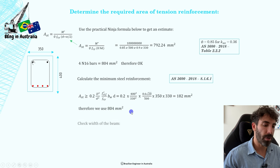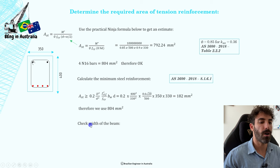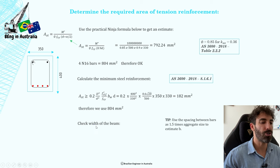Before we keep going, let's check if four N16 bars will fit in our beam. You can either draw this in CAD or you can manually calculate it. To manually calculate it, you need to know that the spacing in between bars is 1.5 times the aggregate size, and the aggregate size is usually 20 millimeters. You need to know the side cover, the diameter of the legs, the diameter of the bars, and the bend radius. The bend radius is equal to two times the leg's diameter.